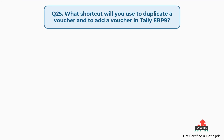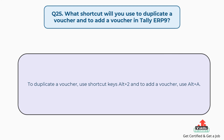Question number twenty five: what shortcut will you use to duplicate a voucher and to add a voucher in Tally ERP9? To duplicate a voucher, use shortcut keys ALT plus 2, and to add a voucher, use ALT plus A.